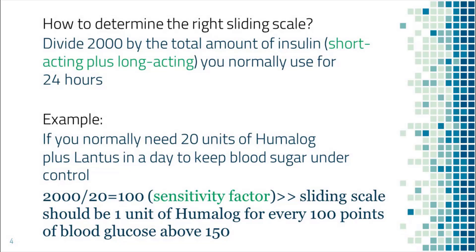Now let's look at how to determine the right sliding scale. Divide 2000 by the total amount of insulin that you normally need to get blood sugar under control over 24 hours. The total amount includes both short and long acting insulin combined.